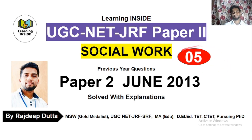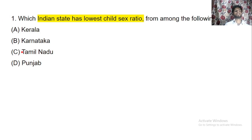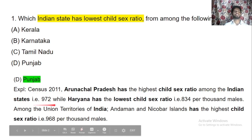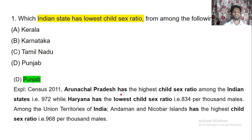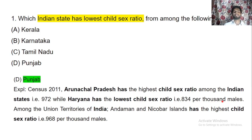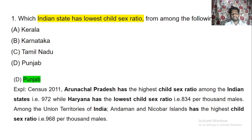This is video number five. Let's start with question number one: which Indian state has the lowest sex ratio? According to Census 2011, Arunachal Pradesh has the highest sex ratio at 972, while Haryana has the lowest at 834. Sex ratio is measured per thousand males. Among union territories, Andaman and Nicobar Islands has the highest child sex ratio at 968 per thousand males.